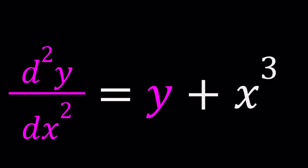Hello everyone. In this video we're going to be solving a differential equation, a second order differential equation. We have d squared y over dx squared equals y plus x cubed. d squared y over dx squared is the second derivative of y with respect to x. You can also think of it as the derivative of the first derivative.